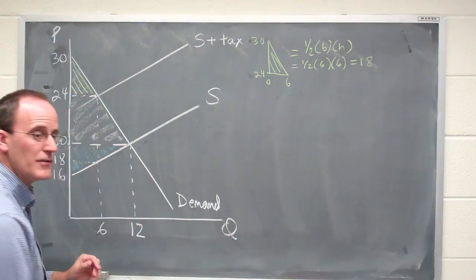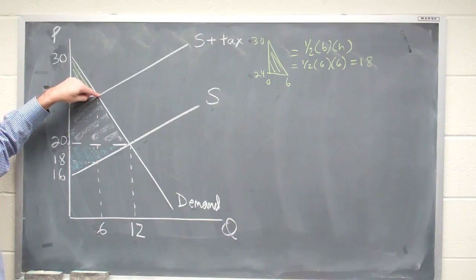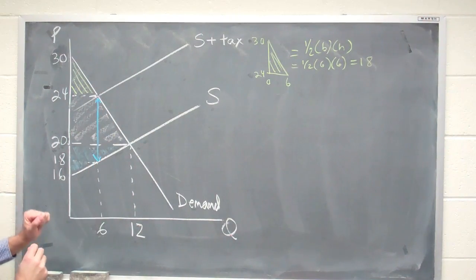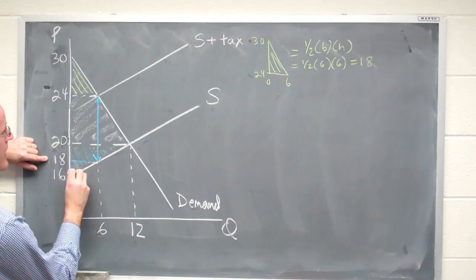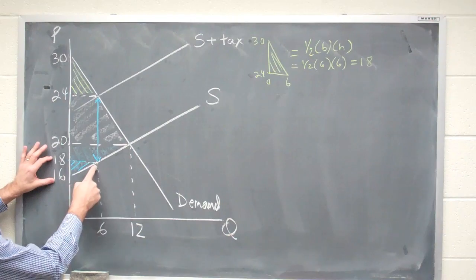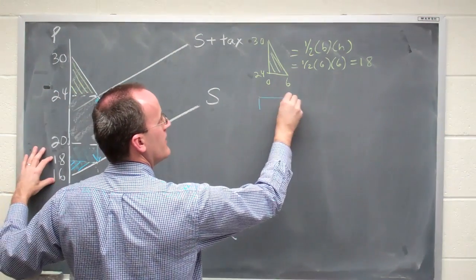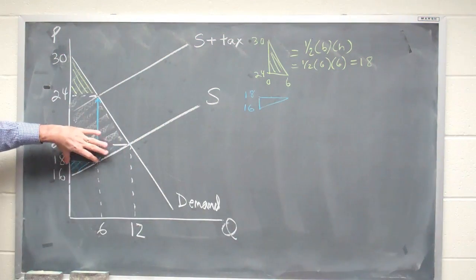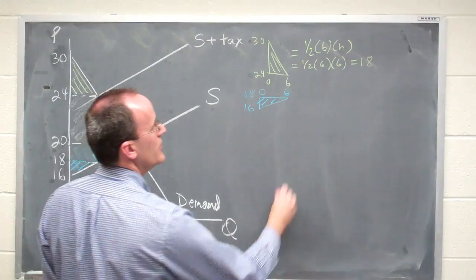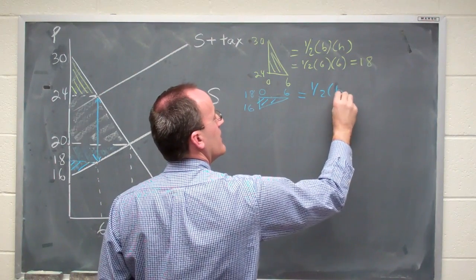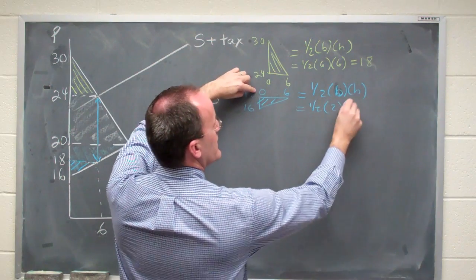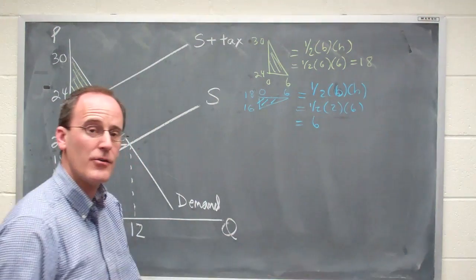Next for us is to ask the question what happens to the producer surplus. Well, the market price is 24, but we have to take out the tax, and the tax amount is right here. In this case, the tax is the difference between the 24 and the 18. So what the producer has left over after the tax is implemented is they receive a net price of 18, and they get the difference between the 18 and their willingness to supply the good down here at 16. We'll take that little shaded area. I'm just going to pop it out over here. And you can see this area goes from zero to six. We want to take one half the base times the height. In this case, the base is two and the height is six. One half of twelve is six. So that's our remaining area of producer surplus.